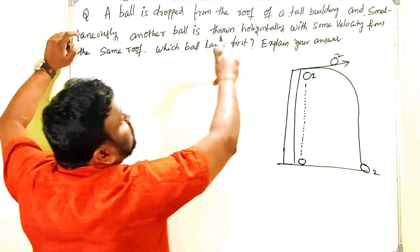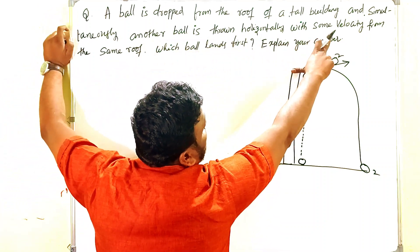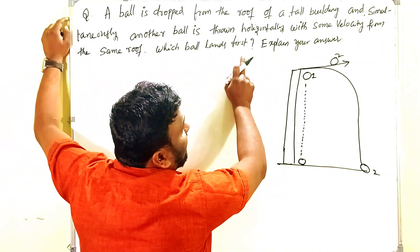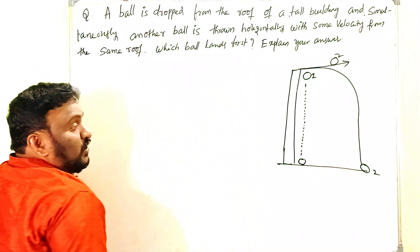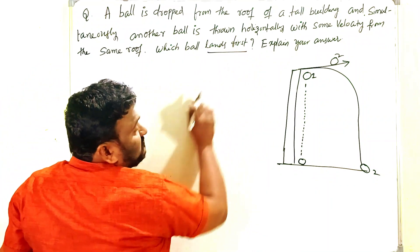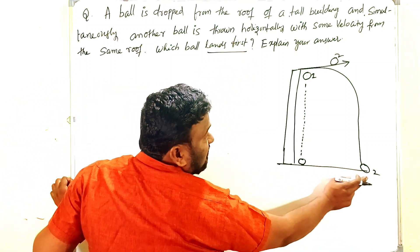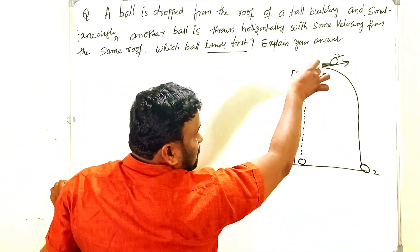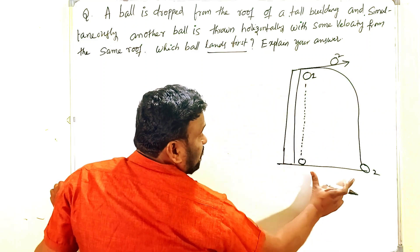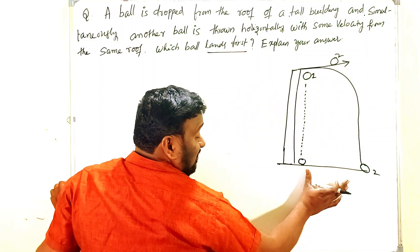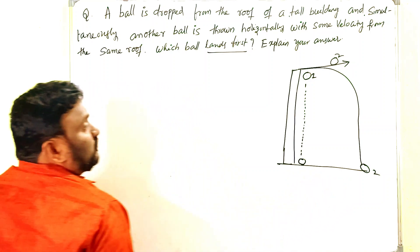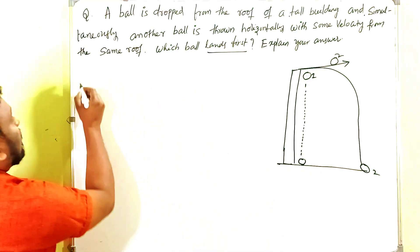Another ball is thrown horizontally with some velocity from the same roof — which ball lands first? We have two objects: one is dropping and one is projected horizontally. Among these two balls, which ball lands first? We have to give the answer for that.